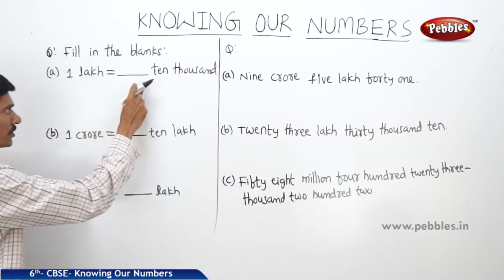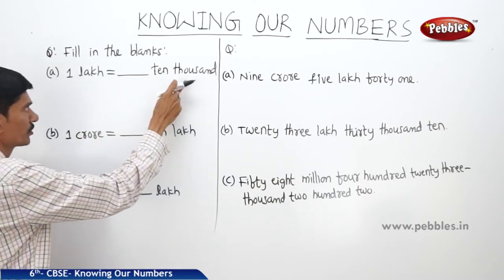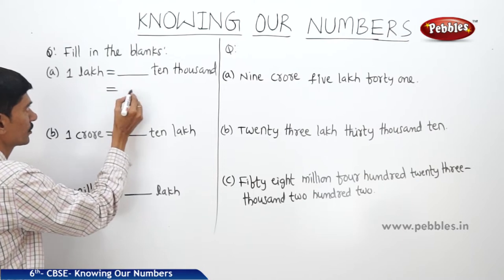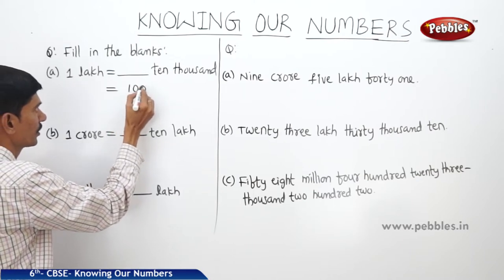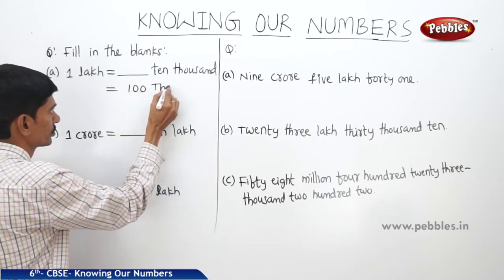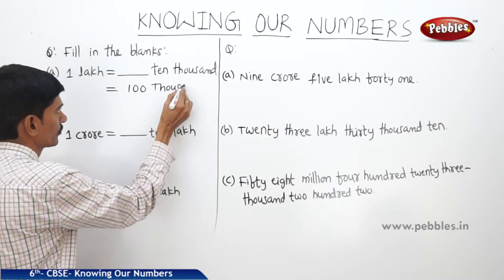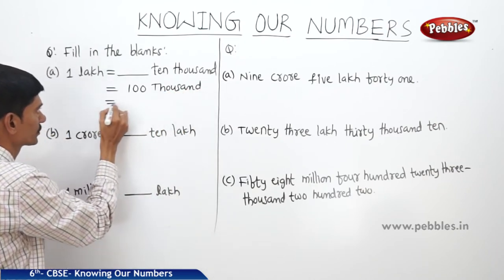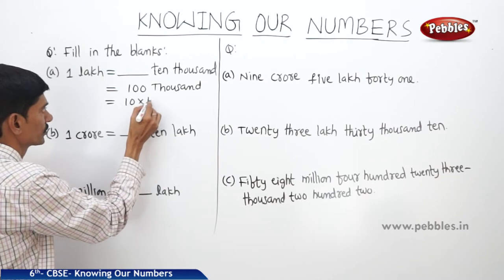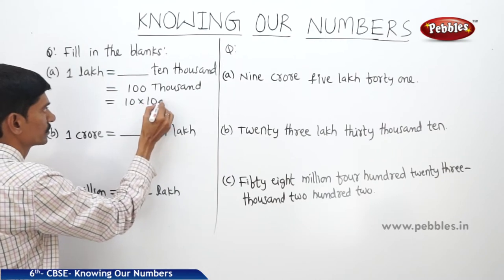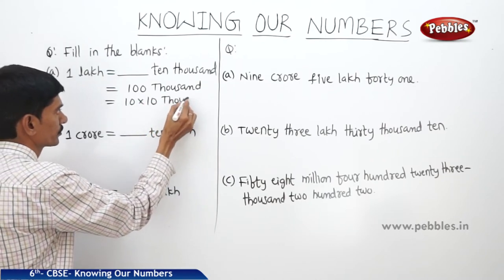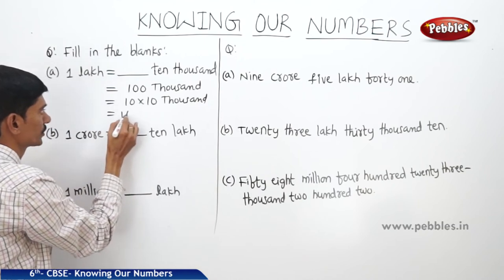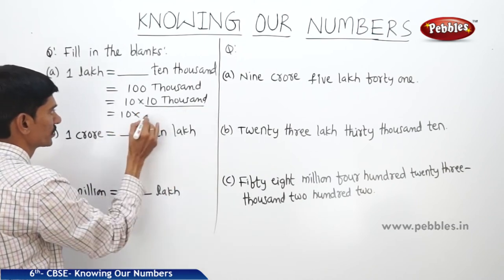So, 1 lakh equals how many 10,000s? We know that 1 lakh equals 1,00,000. This 100 can be written as 10 × 10, so 1 lakh equals 10 × 10,000. Therefore, 1 lakh equals 10 ten-thousands.